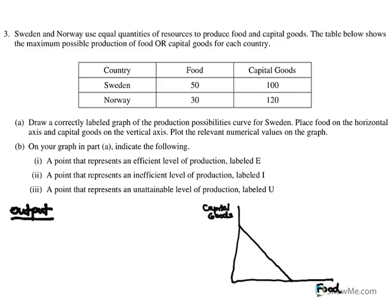It wants us to label the points. So this would be 100 capital goods or 50 food units. Then we have to label these points E, I, and U. I'll do each one a different color just so they're visually appealing.